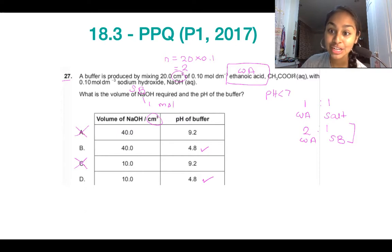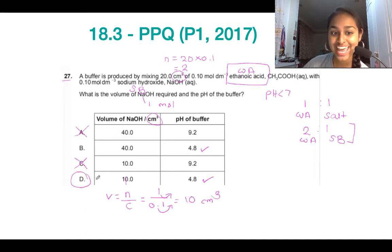Now to work out the volume, I'm going to use the same NCV triangle. Volume is going to equal moles over concentration. So that's going to equal one divided by the concentration, which is 0.1. Because we're dividing it by a decimal place, you can divide everything by 10. So that becomes 10 over 1, which is 10. So the volume of NaOH needed to generate the buffer solution is D. The key points to bear in mind are the two recipes that we use to form buffer solutions.